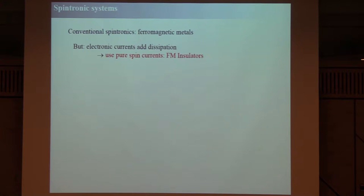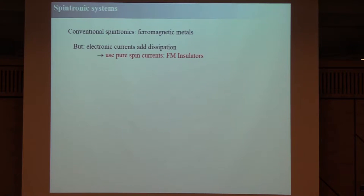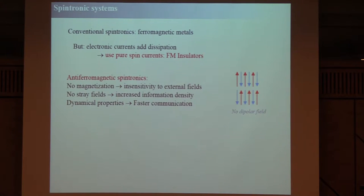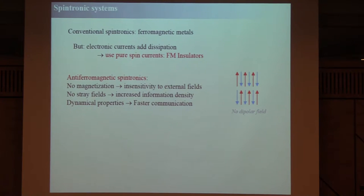A few words about spintronics and antiferromagnetic spintronics. I don't have to sell antiferromagnetic spintronics to you, but I want to make a couple of points. In conventional spintronics, people used to use metals. More and more, because of dissipation problems mainly, they try to use pure spin currents and therefore ferromagnetic insulators. In antiferromagnetic spintronics, the main advantages are: there is no magnetization, no stray field, and potentially the dynamical properties are much faster.